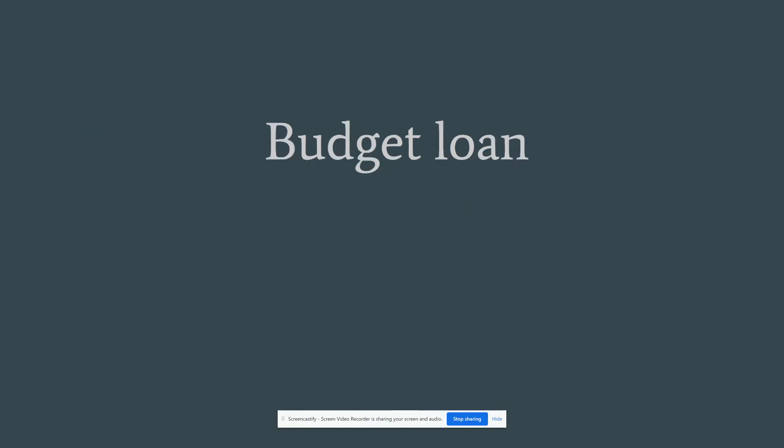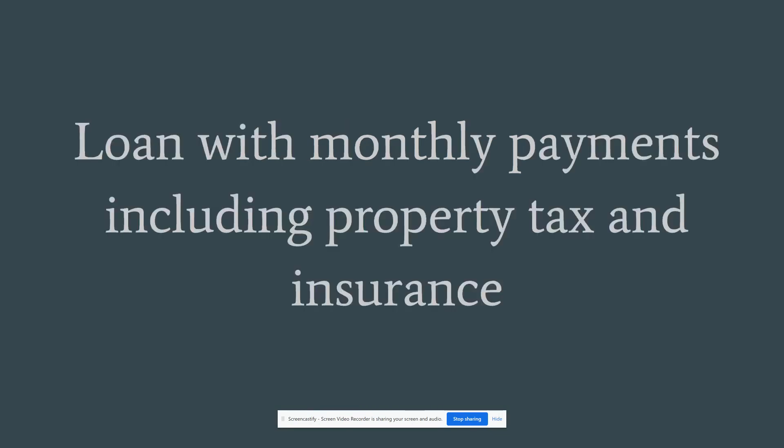Budget loan. That's a loan with monthly payments including property tax and insurance. They're going to probably escrow those things depending on the circumstances, and they'll have some sort of reserves on hold. This is a loan that makes monthly payments covering principal, interest, as well as tax and insurance — putting it all into one lump sum.